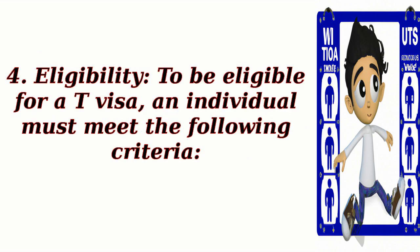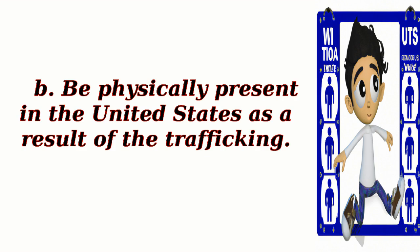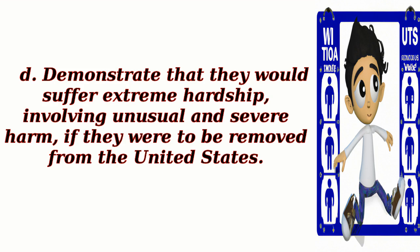To be eligible for a T-Visa, an individual must meet the following criteria. A. Be a victim of severe trafficking, as defined by U.S. law. B. Be physically present in the United States as a result of the trafficking. C. Comply with any reasonable requests for assistance in the investigation or prosecution of trafficking crimes. D. Demonstrate that they would suffer extreme hardship involving unusual and severe harm if they were to be removed from the United States.